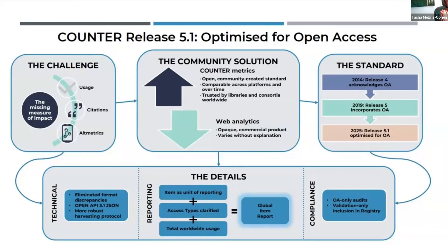We did three things within the code of practice itself to really optimize it for open access. One is that shift to item — that tiny granular item being the unit of reporting. We are much less focused on title, so that's journal or book-level reporting, than we are on the individual items. We also clarified our access types, so we no longer specify OA gold — it just is open. Whatever flavour of open access you are working with, you're good to go. There is still 'controlled' for those running hybrid titles, and 'free to read' if something is temporarily free. The third thing we really boosted is what we call the global reports. For open access, usage by a specific institution is much less relevant than the total usage worldwide.